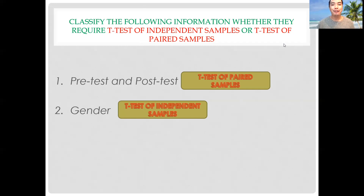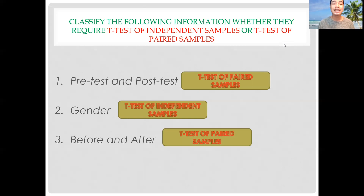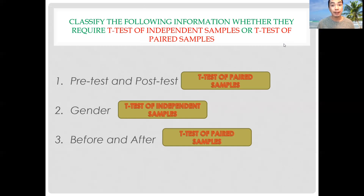Last: before and after. If you have data of before and after, you should use t-test of paired samples. For example, say you are conducting a Zumba activity as part of a fitness program. You get the before weight of participants, then after a month of program implementation, you get the after weight. To determine whether the program is effective, you can use t-test of paired samples to compare the means.